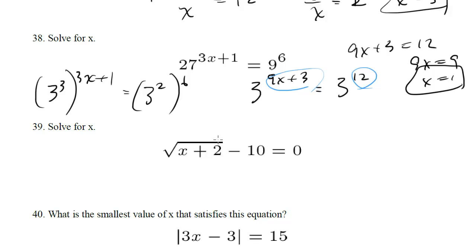Solve for x. We want to get rid of this square root, but before we do that, before we can square both sides to get rid of the square root, let's make sure we just have a square root on the left. So we're going to move the 10 to the other side. We're going to get square root of x plus 2 equals 10. Now we can go ahead and square both sides. This is going to be x plus 2, this will be 100. So finally x is 98.